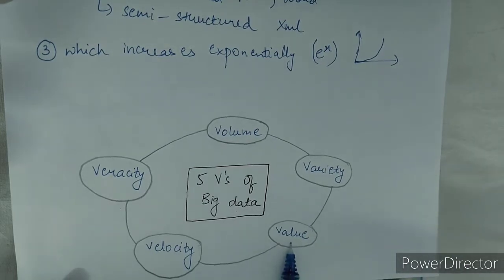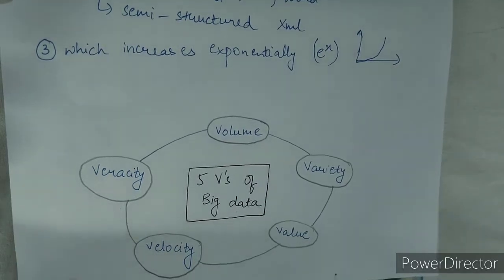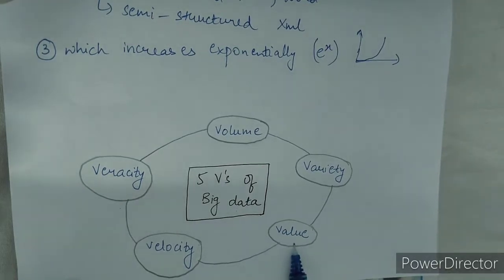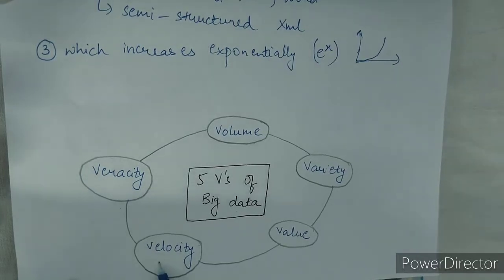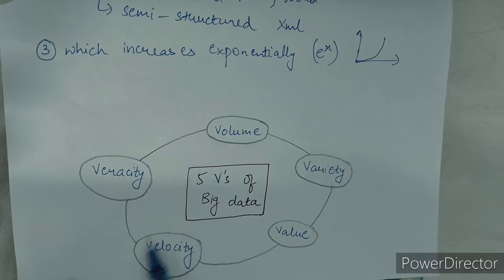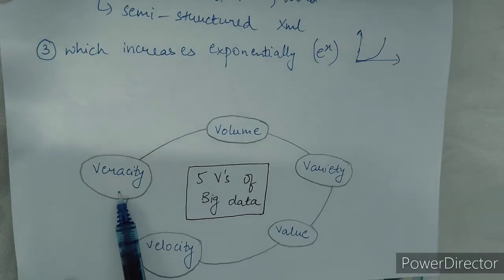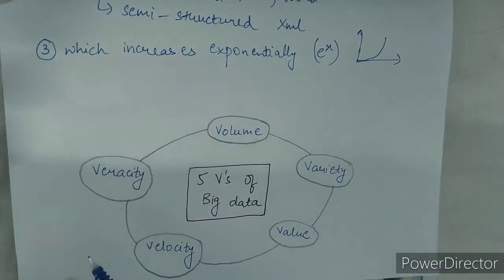Next is value, which means what is the worth of the data we have extracted. At last, what we have to do with big data is find out insights so we can use them for the future and for predictive analysis. Next is velocity, which tells us how much data is generated and at what speed. Next is veracity, which means how accurate the data is — what is the quality of the data you have captured.